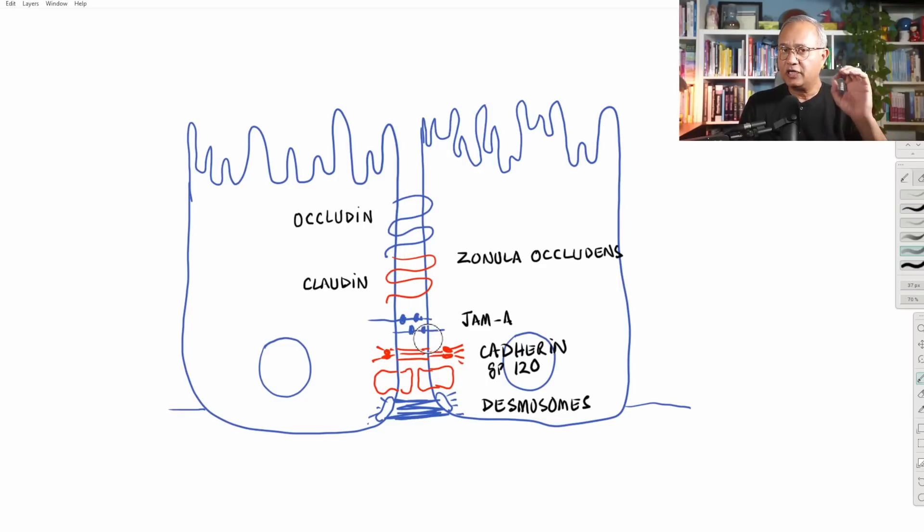However, majority of the content that we are digesting and absorbing, that would pass through the cell. So it would enter the cell first and then it would enter behind the cell into the circulation. So that passage will be called intracellular passage. And the passage of anything that is around the cells through those gaps between the cell will be called extracellular or paracellular passage.